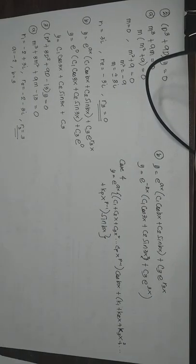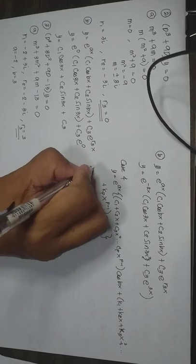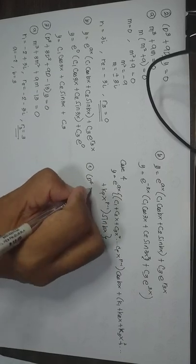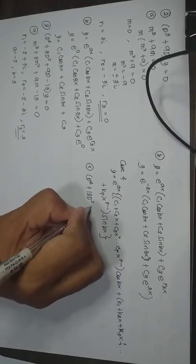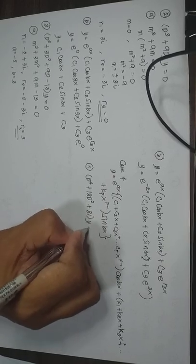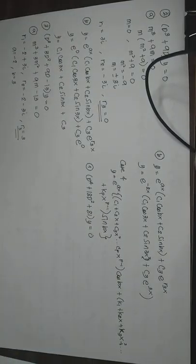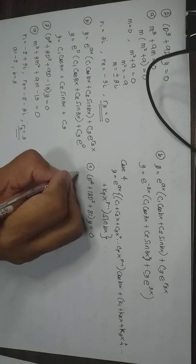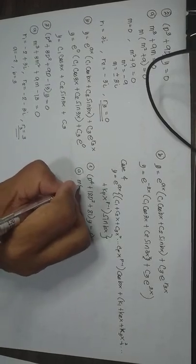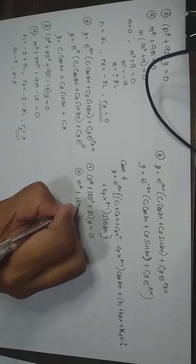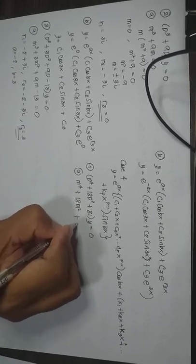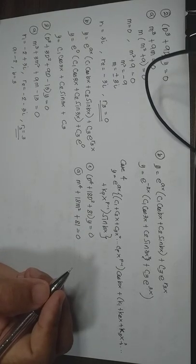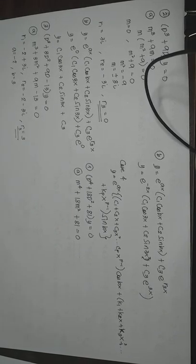Let's have example number 1. Find the solution of D to the 4th plus 18D squared plus 81 Y equal to 0. The auxiliary equation is, letter A, M to the 4th plus 18M squared plus 81 equal to 0. What will be the roots of this?